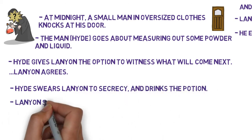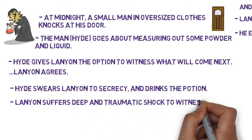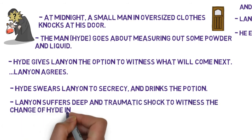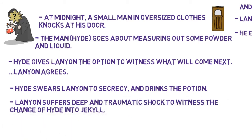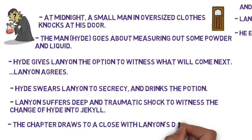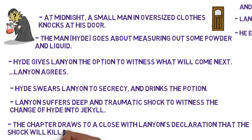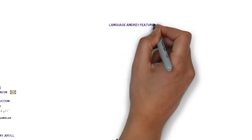Lanyon suffers deep and traumatic shock to witness the change of Hyde into Jekyll. Lanyon states that Jekyll stayed and explained everything to him, but Lanyon writes that he cannot bring himself to write it down. The chapter draws to a close with Lanyon's declaration that the shock will kill him, and that Jekyll is Hyde. Now let's move over to look at some of the key features and language used in this chapter.